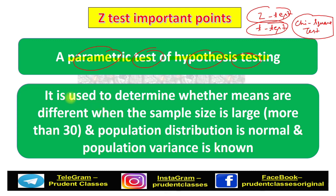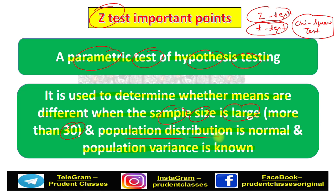The Z-test is used when you need to determine whether the mean is different. You use this test when the sample size is large — specifically when sample size is greater than 30. When sample size is less than 30, use T-test; when greater than 30, use Z-test. Other conditions: population distribution should be normal, and population variance should be known.